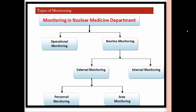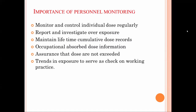Routine monitoring is subdivided into two parts: external monitoring and internal monitoring. Internal monitoring covers contamination, while external monitoring is most commonly used throughout India. External monitoring has two parts: personal monitoring and area monitoring. Today we are focusing on personal monitoring.